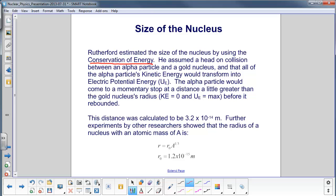At a certain point, and this is what he assumed the radius of the nucleus was, the alpha particle would stop momentarily as the two forces balanced.